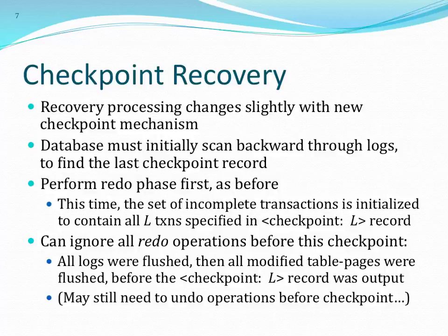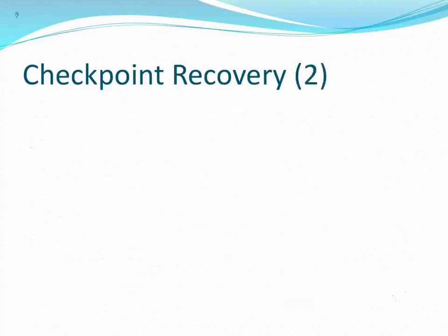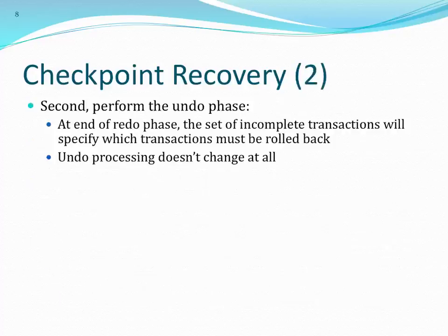After the redo phase, we perform the undo phase. Undo processing doesn't change much except we ignore checkpoint records we come across. We maintain the set of incomplete transactions, updating it as before. Once we reach the end of the redo phase, we know which transactions need to be rolled back, and we proceed with undo processing.